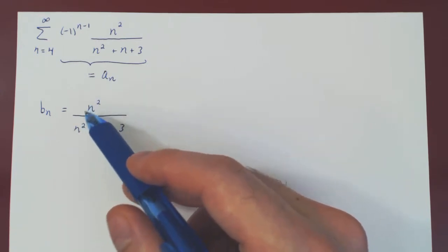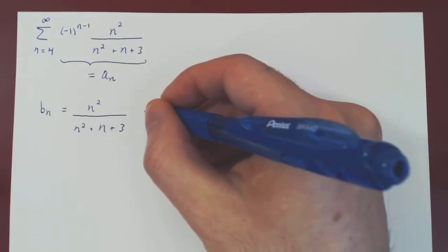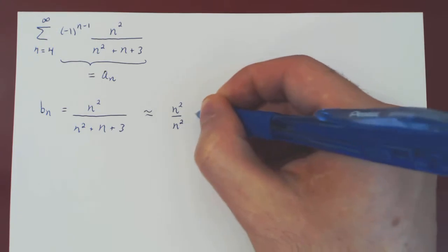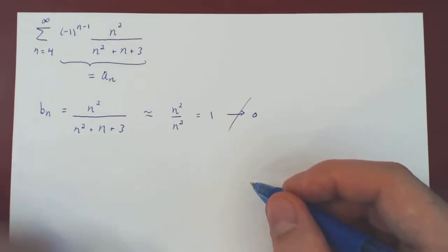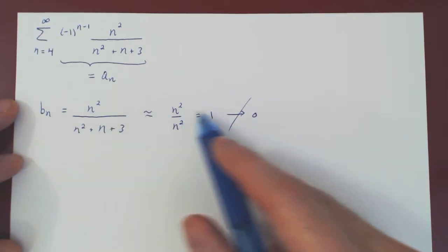The dominant term on top is n squared, the dominant term on the bottom is n squared. So, when n is large, bn is roughly n squared over n squared, which is 1, which clearly is not going to shrink to zero. So, right now you should suspect that things are not going to work out.